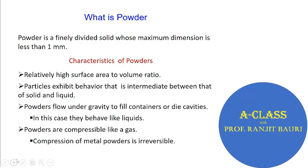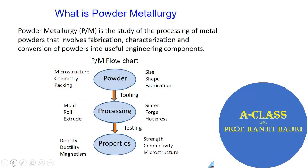Powders are compressible like a gas, and compression of a metal powder is irreversible — that means once you compress or compact it, you cannot get it back to the initial condition. These are the typical characteristics that a powder should have, apart from the fact that the dimension of powder particles should be less than 1 millimeter.